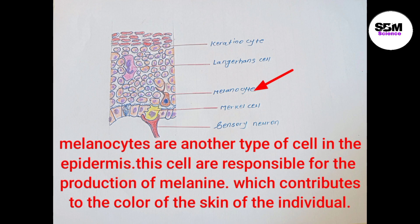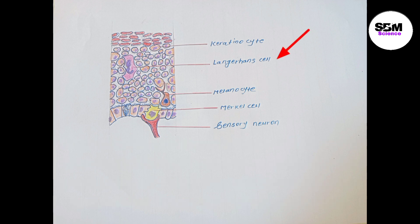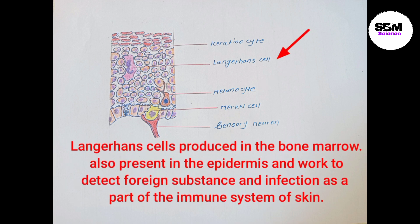Melanocytes are another type of cell in the epidermis. These cells are responsible for the production of melanin, which contributes to the color of skin of individuals. Langerhans cells, produced in the bone marrow, are also present in the epidermis and work to detect foreign substances and infection as part of the immune system of the skin.